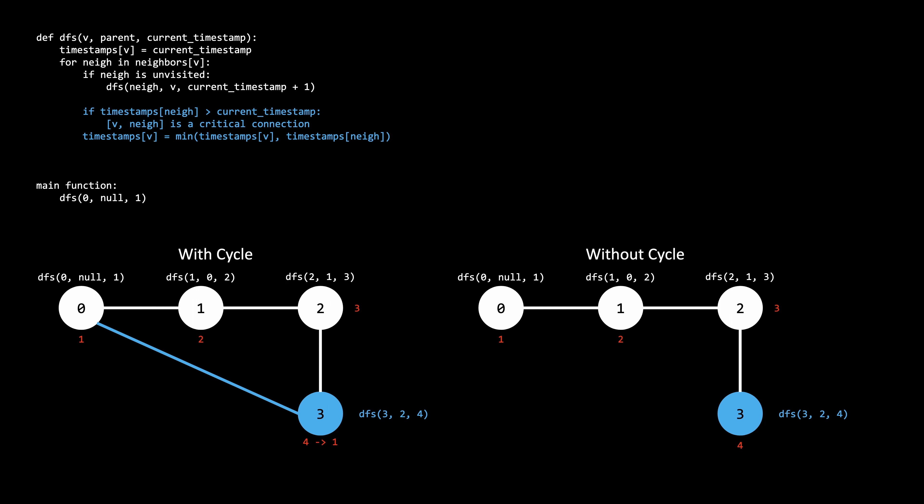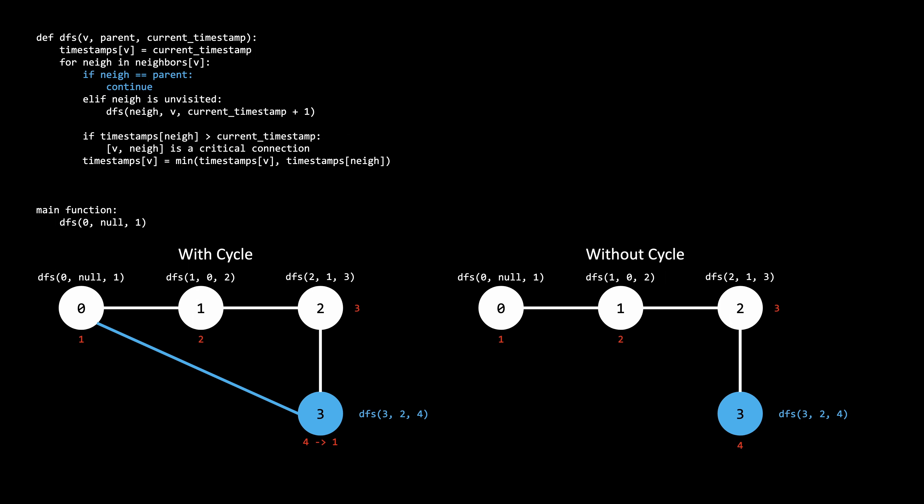Looking at the cycle example to compare: when there is a cycle, there would be an extra call from vertex 3 to vertex 0, and we would encounter a timestamp of 1, which is lower. The solution is trying to differentiate between these two cases. If the timestamp of the neighbor is greater than the current timestamp, then the connection from V to the neighbor is a critical connection. Also, for the cycle detection to propagate up the recursive stack, we need to update the timestamp of the current vertex to be the minimum of its timestamp and all of its neighbors. One caveat is we need to ignore lower timestamps which come from the parent vertex. To handle this, we add an if condition where if the neighbor we are exploring is the parent, we continue to the next iteration of the for loop.